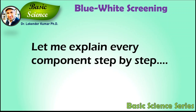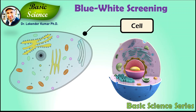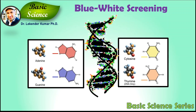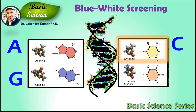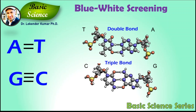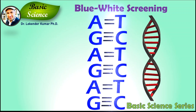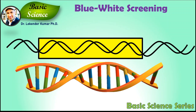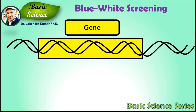Let me explain every component step by step. Let's start with the cell. Every cell has DNA as its genetic material. DNA is deoxyribonucleic acid and is made up of four nitrogenous bases called adenine, guanine, cytosine, and thymine. Adenine and thymine bind together with a double bond, whereas guanine and cytosine bind together with a triple bond. This bonding makes DNA a strong double-stranded biopolymer. Cells store all the information required for their function in DNA in the form of genes.